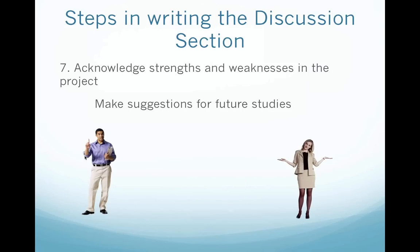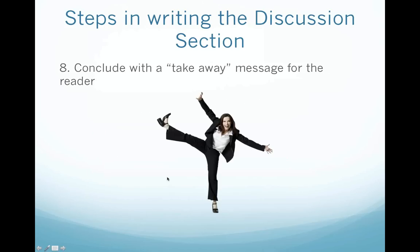We want to acknowledge strengths and weaknesses in the project. The weakness is always that with an N of one, you're only getting information for one person. But there might be other weaknesses, such as how you chose to report a finding. This is a place to acknowledge that and make suggestions for future studies. And then lastly, we typically conclude with a takeaway message for the reader. That's the discussion section.